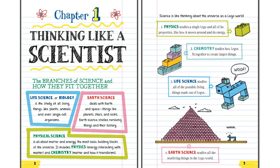Science is like thinking about the universe as a Lego world. Physics studies a single Lego and all of its properties, like how it moves around its energy. Chemistry studies how Legos fit together to create larger things. Life science studies all of the possible living things made out of Legos, and earth science studies all of the non-living things in the Lego world.